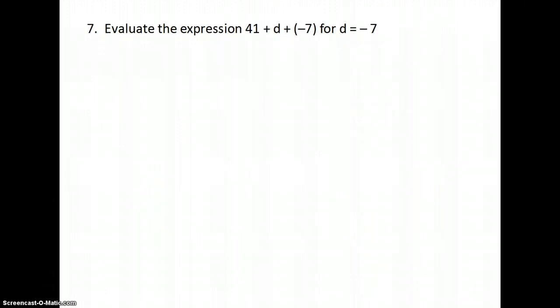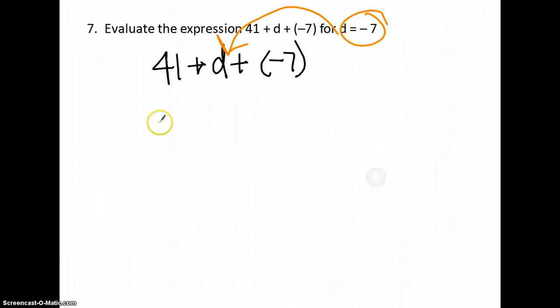So now we're going to evaluate the expression 41 + d + (-7) for d = -7. So I'm going to write my original problem, 41 + d + (-7), and I'm going to plug in d = -7 for d. So it gives me 41 + (-7) + (-7).